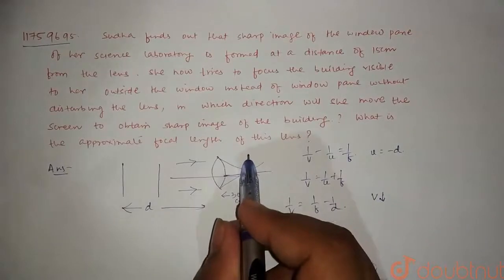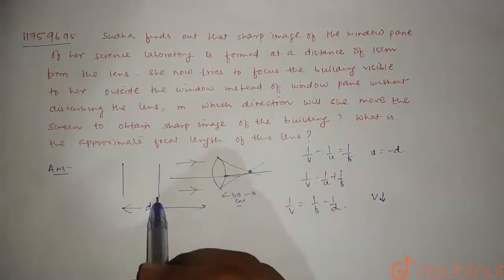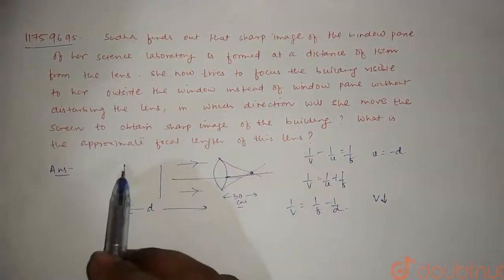Using 1 by V minus 1 by U equals 1 by F. At a distance of 30 cm from this lens, the image is formed from this window pane. So now we have to create a building image.